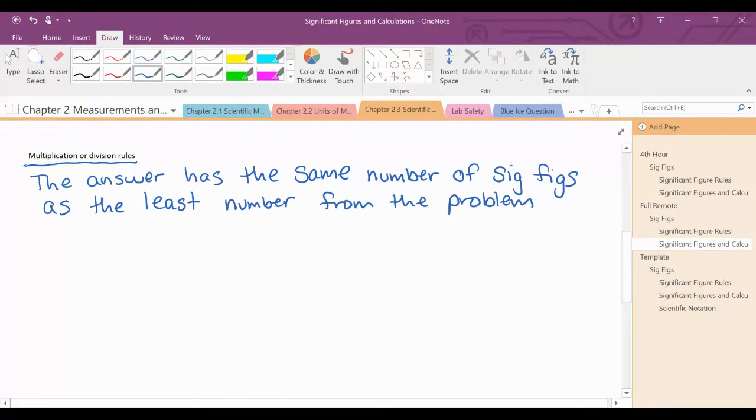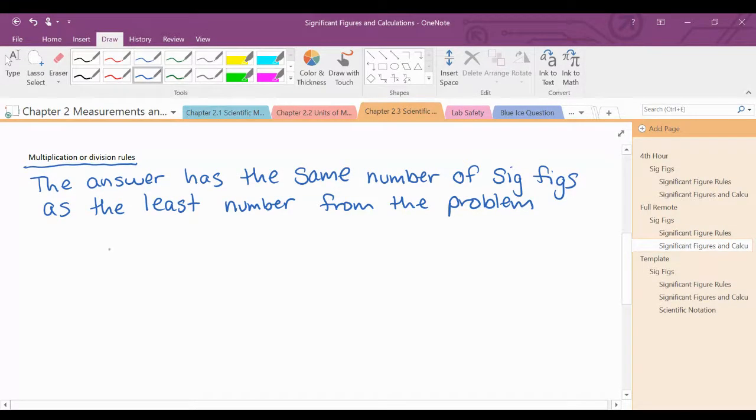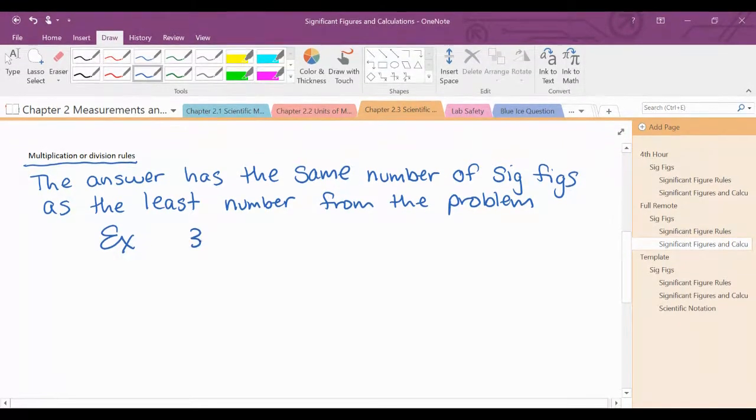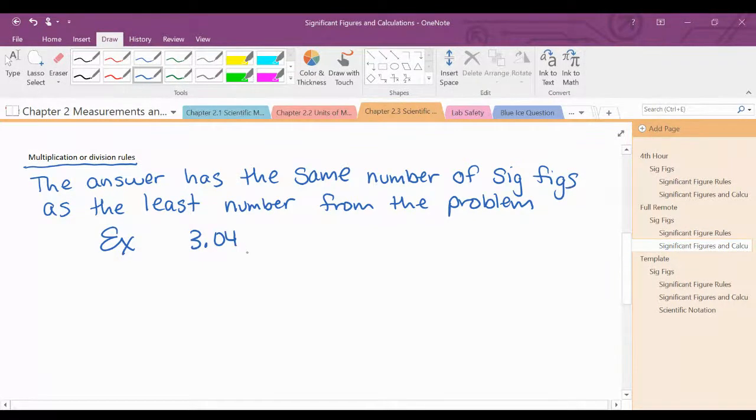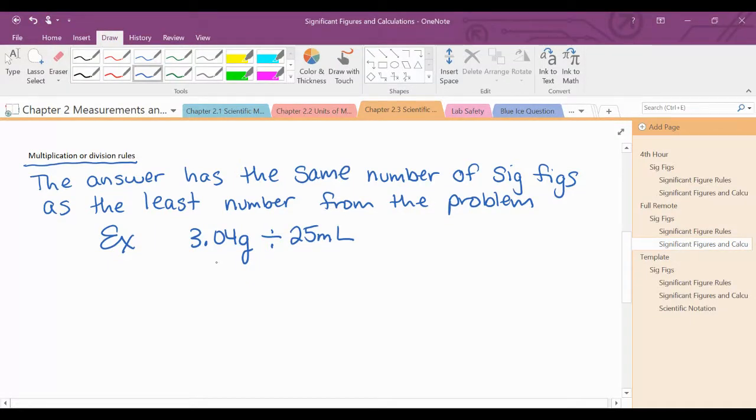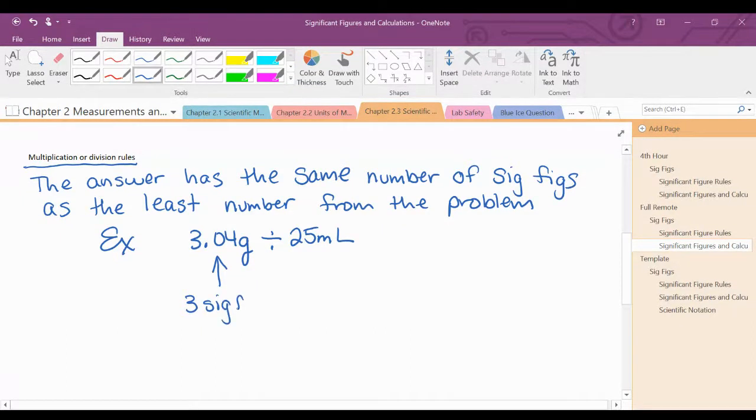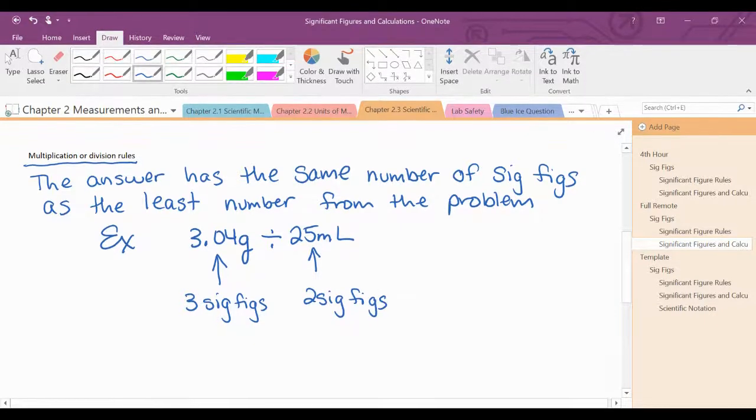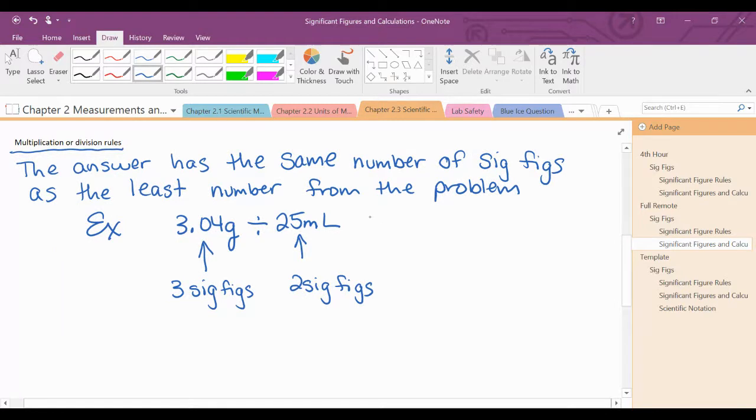So for example, if I had 3.04 grams divided by 25 milliliters, this has 3 sig figs, this has 2 sig figs. So my answer can only have the least number from the problem. So my answer, when I round it, will only have 2 sig figs.